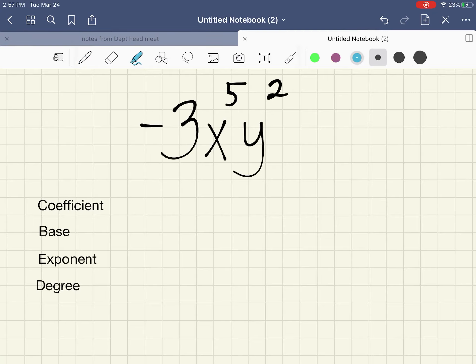Looking at the expression negative 3x to the fifth y squared, the coefficient, or basically any of the values, the numbers that are multiplying in front. So in this case, negative 3 would be considered the coefficient.